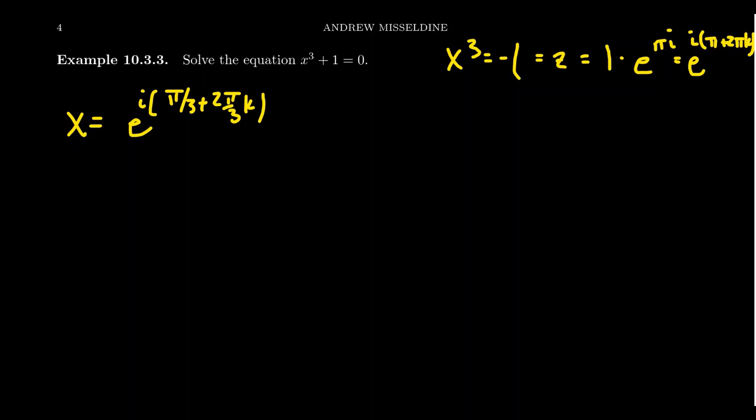And so we are going to end up with three possible complex roots. So the first one, the principal root, we'll call it w₀ here. This is going to be e^(i(π/3 + 2π/3·0)), like so.